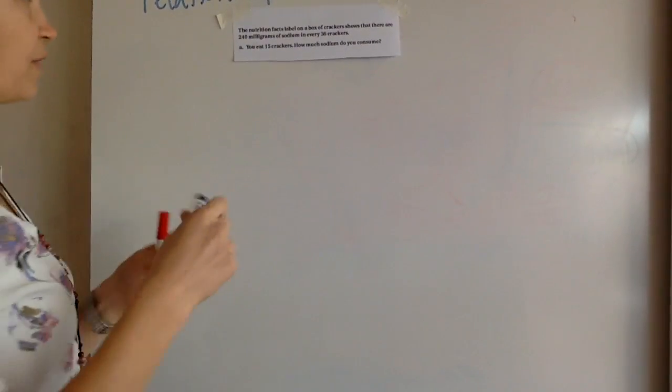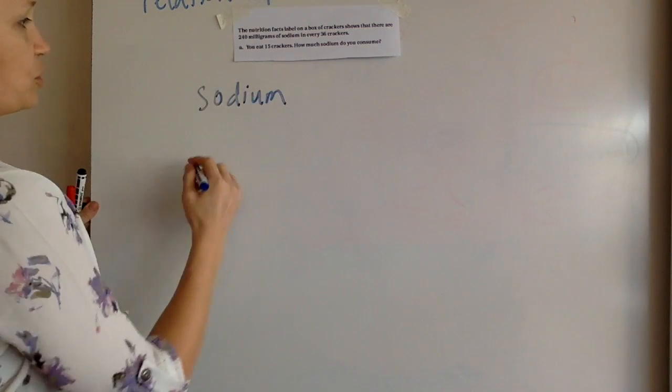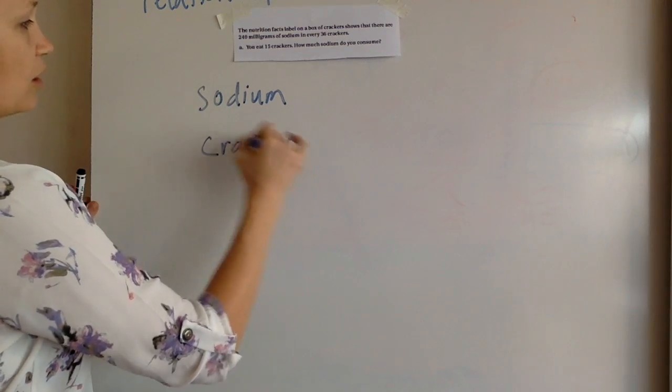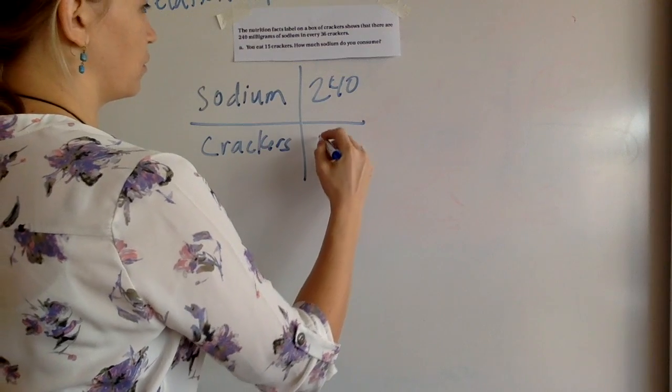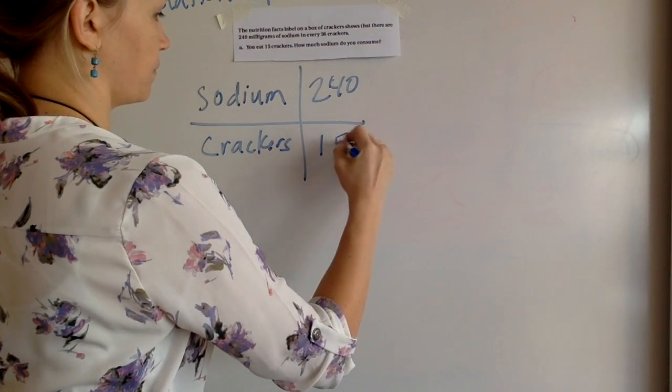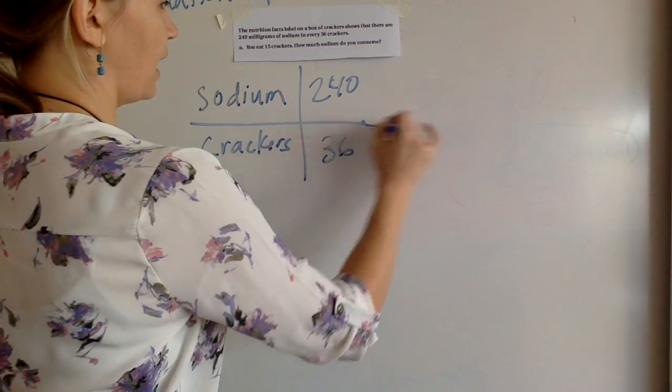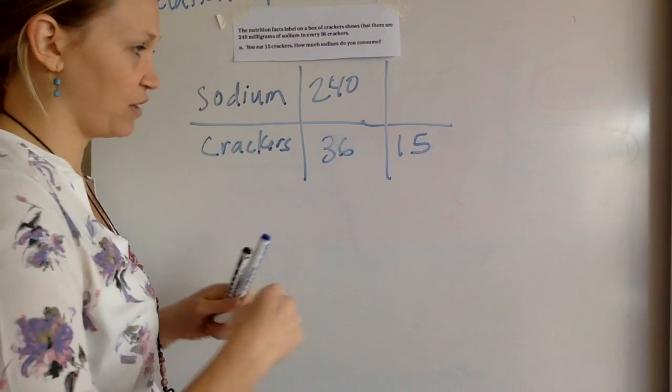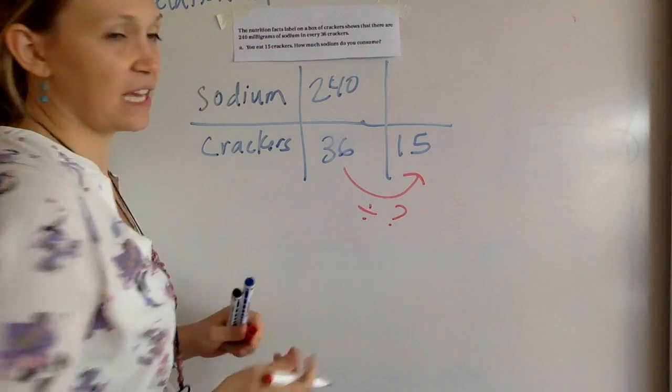Okay, those of you that are still with me, of course, we're going to be making a ratio table. So in this case, we're talking about sodium compared to the crackers. And our original ratio is 240 to 36. And we're trying to figure out, well, how many in 15 crackers? So what you're trying to figure out is this relationship here. What can I divide by to get 15?